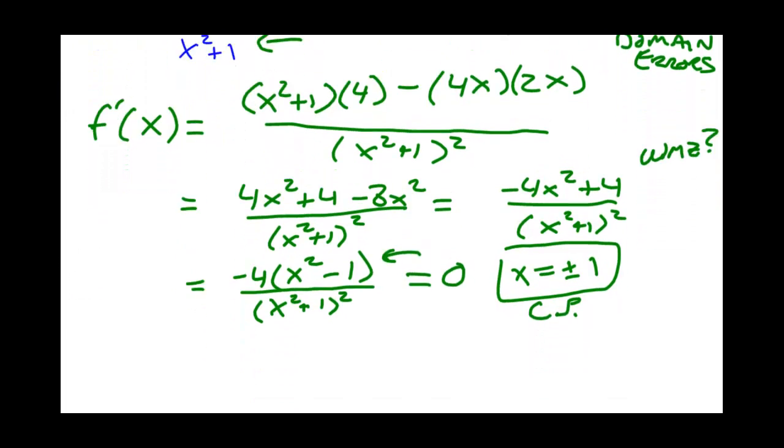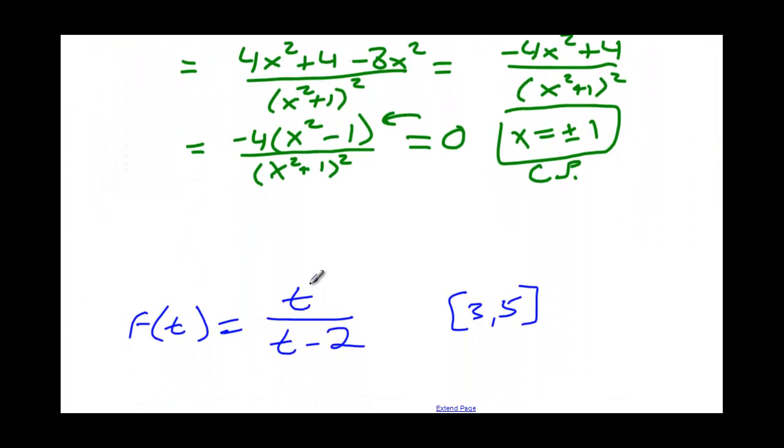Let's try another one. I've got another equation. It's t over t minus 2, another function of t this time. It wants to know the absolute maximum and the absolute minimum of this function in this interval [3, 5].